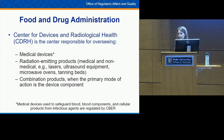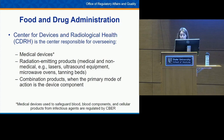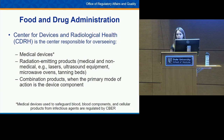For the most part, medical devices are overseen by the Center for Devices and Radiological Health (CDRH) at the FDA. They oversee most medical devices, radiation-emitting products (medical and non-medical, such as lasers, ultrasound equipment, microwave ovens, and tanning beds), and combination products when the primary mode of action is the device component. For example, drug-eluting stents are overseen by CDRH because FDA determined the stent portion is the primary mode of action.